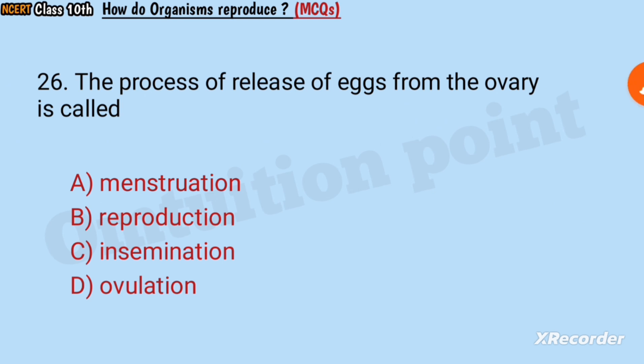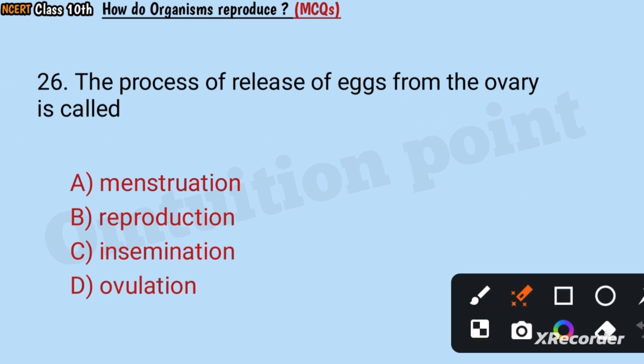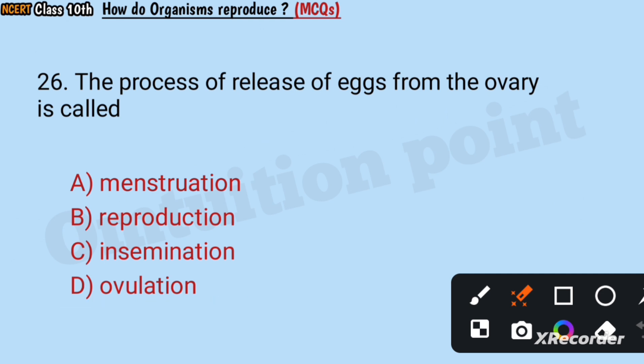Question number 26: The process of release of eggs from the ovary is called menstruation, reproduction, insemination, or ovulation? Answer: Ovulation.